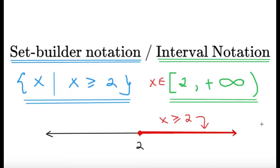These are two standard techniques when you want to describe a set of solutions that you cannot really elaborate — you can't list down all the elements. For example, if you want to include values of x greater than or equal to 2, this red part is the graph of x ≥ 2.